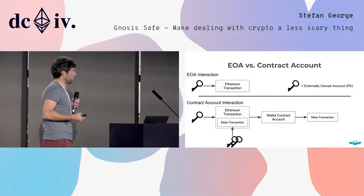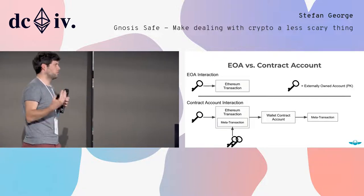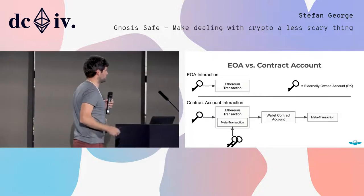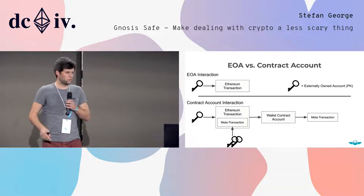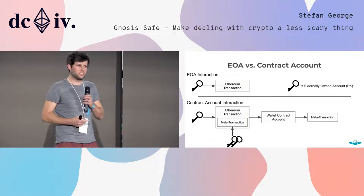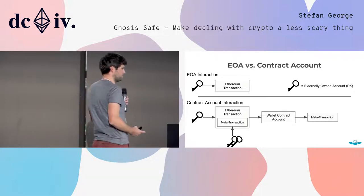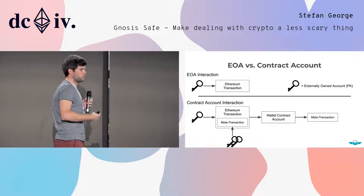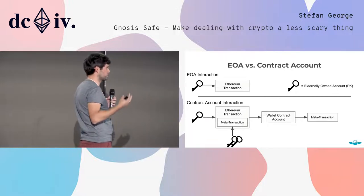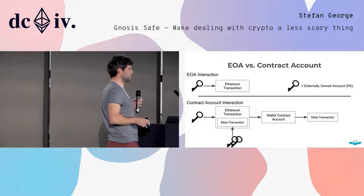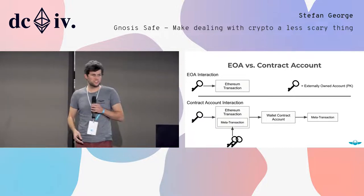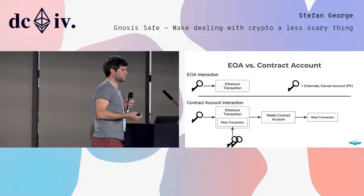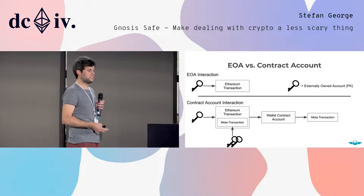Let's look at how this actually works. With an external account, you just sign an Ethereum transaction — that's what we do all the time. But the more interesting part is the contract account interaction. What you do is sign something called a meta transaction — a transaction which will be executed from the wallet contract account, from the proxy contract account. This meta transaction still has to be broadcasted to the Ethereum network, and someone has to sign it, but this doesn't necessarily have to be the same entity as the one signing the meta transaction.